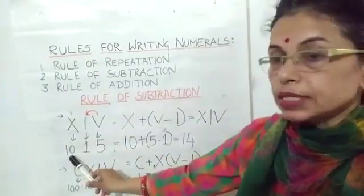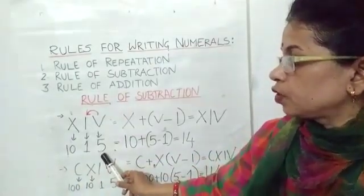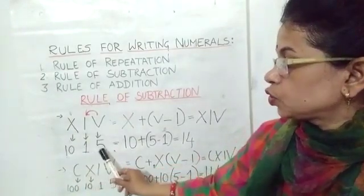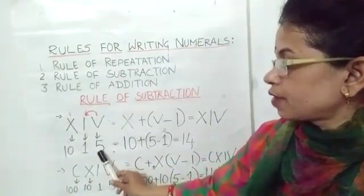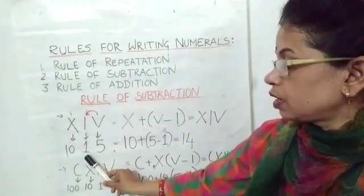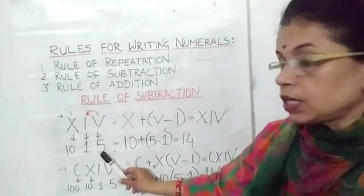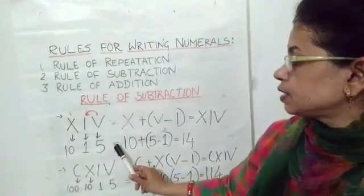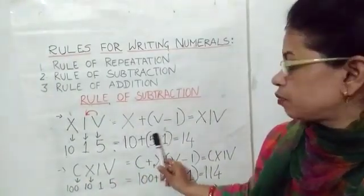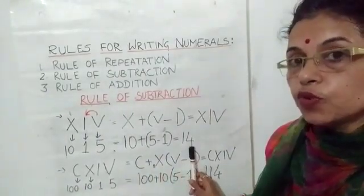X represents 10, I represents 1, V represents 5. So 1 is written between two larger numbers 10 and 5. So 1 will be subtracted from the larger number which is just next to it. So we write it as 10 plus (5 minus 1) in brackets, which is equal to 14.